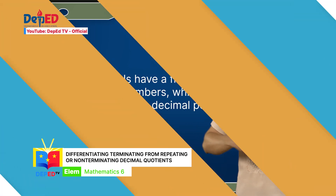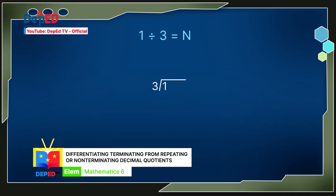In dividing a smaller number by a bigger number, just put a decimal point and add zeros as much as possible. The value is still the same. Ignore the decimal point as if we divide 10 by 3. The quotient is 3, which when multiplied by 3, the product is 9, which makes 1 as remainder. We can continue dividing by adding 0. Divide 10 by 3 again. The answer is 3, which when multiplied by 3, the product is 9, which makes 1 as remainder. As you notice, the remainder will never be 0. The division does not end. Place the decimal point in the quotient directly above the decimal point in the dividend.